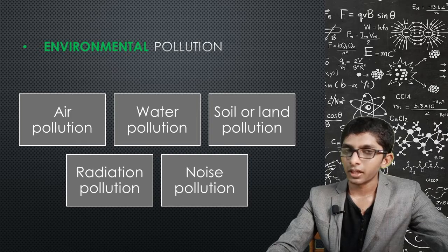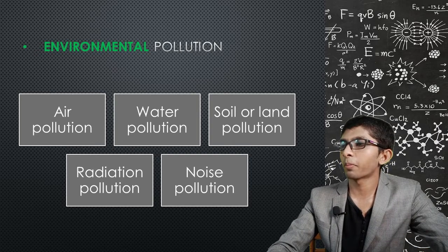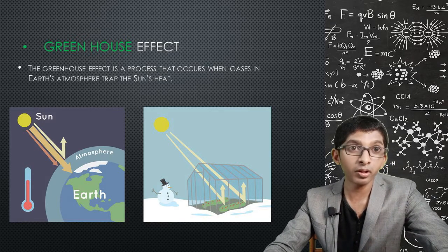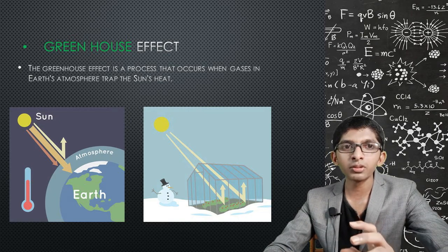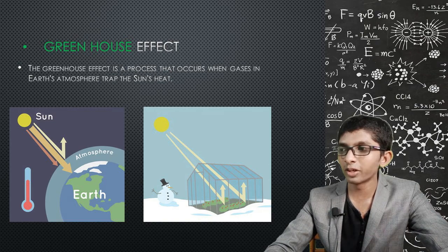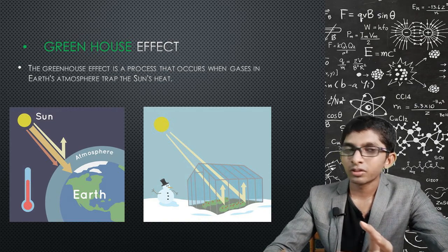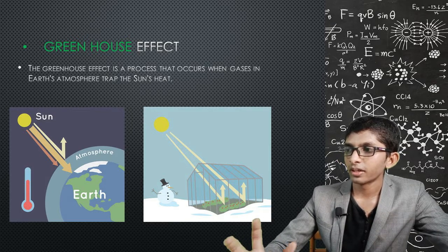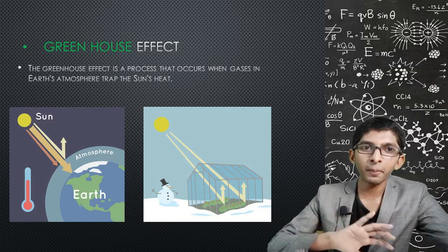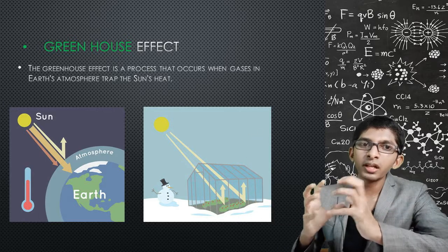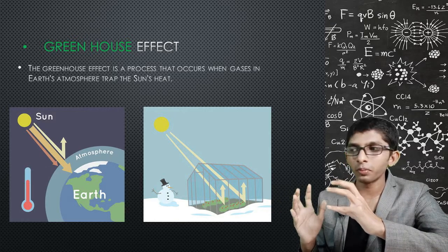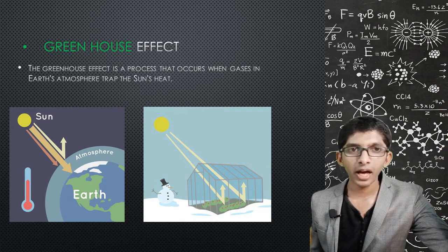The greenhouse effect is another aspect of environmental degradation. Without the greenhouse effect, the Earth's temperature would be around minus 18 degrees, making it uninhabitable. The greenhouse effect traps heat from the sun in the atmosphere, keeping the Earth warm enough to support life.